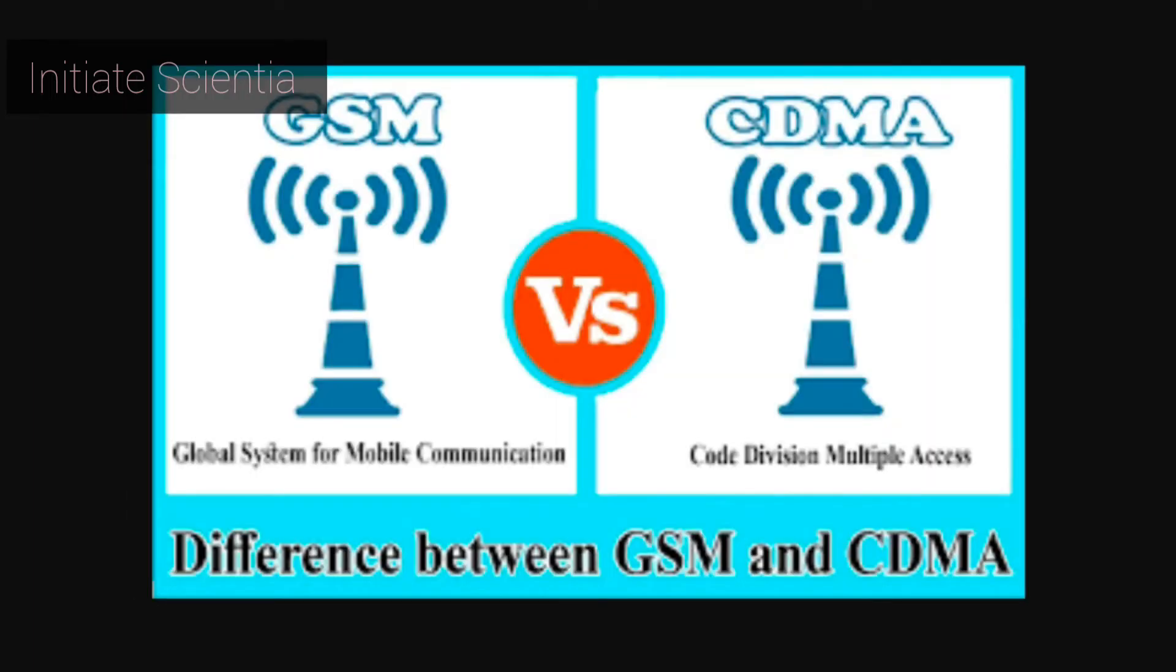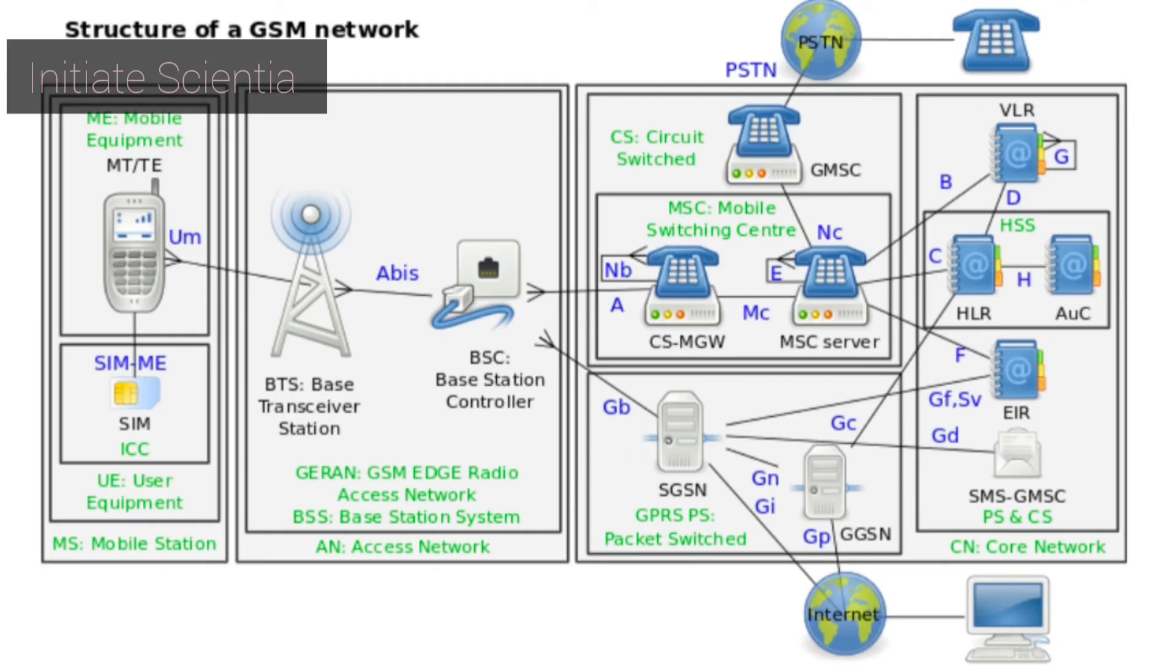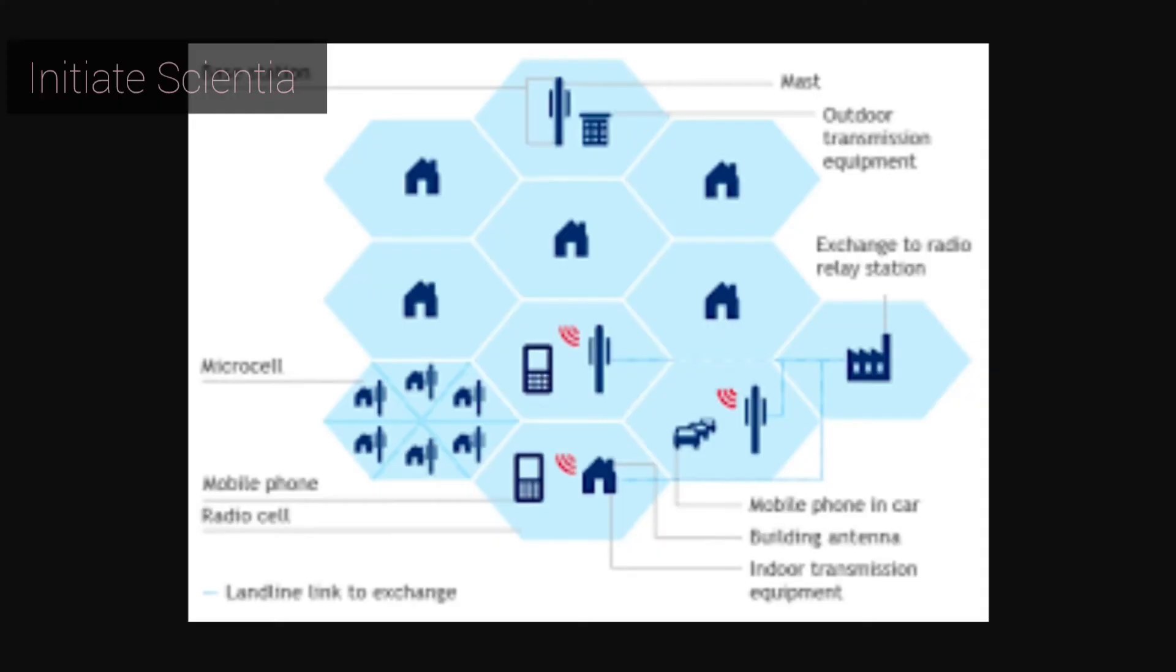The BTS contains the equipment that communicates with the mobile phones, largely the radio transmitter receivers and antennas, while the BSC is the intelligence behind it. The BSC communicates with and controls a group of base transceiver stations.